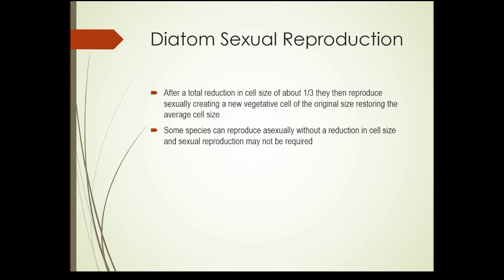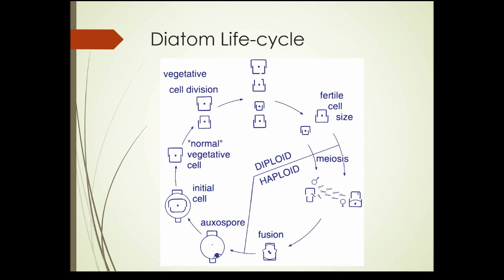They have a solution to that problem. Once the diatom cell has been reduced in size by about one third, they form a fertile cell. That fertile cell reproduces sexually, which creates a new vegetative cell back at the original size, restoring the average cell size. Some species can reproduce asexually without a reduction in cell size, so sexual reproduction may not be required for those. Other species don't have that ability and need the sexual reproduction stage to maintain average cell size.